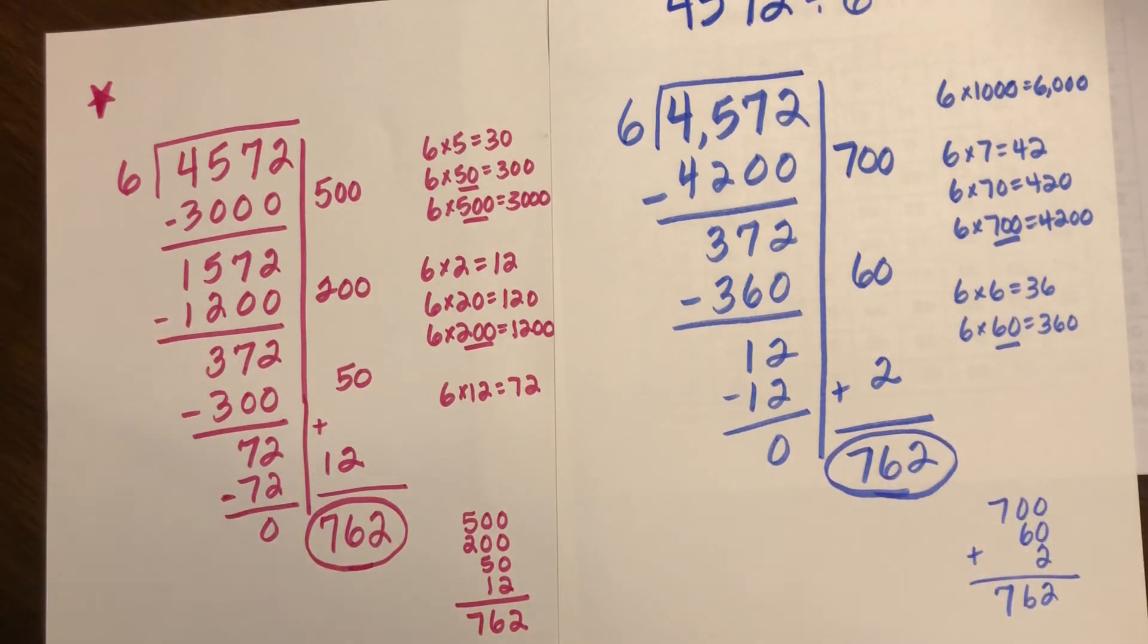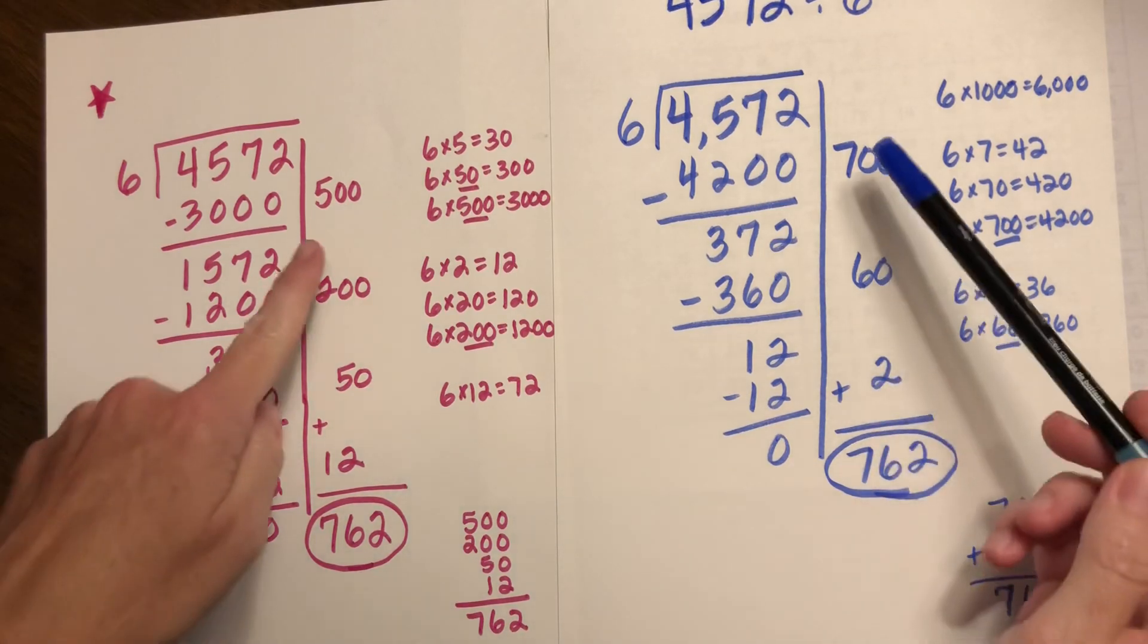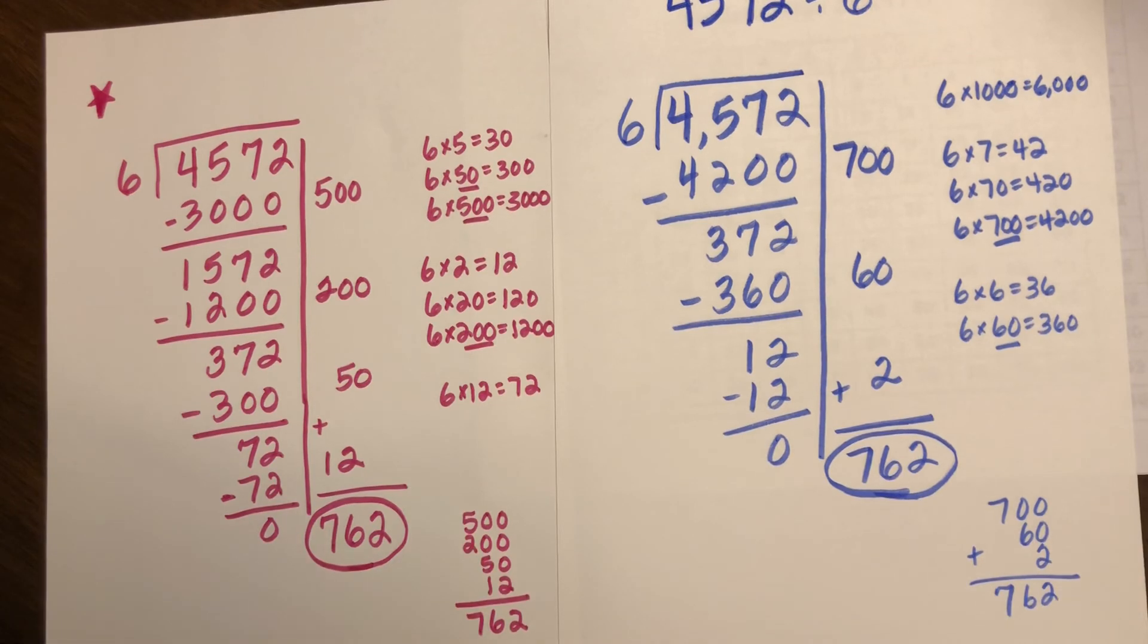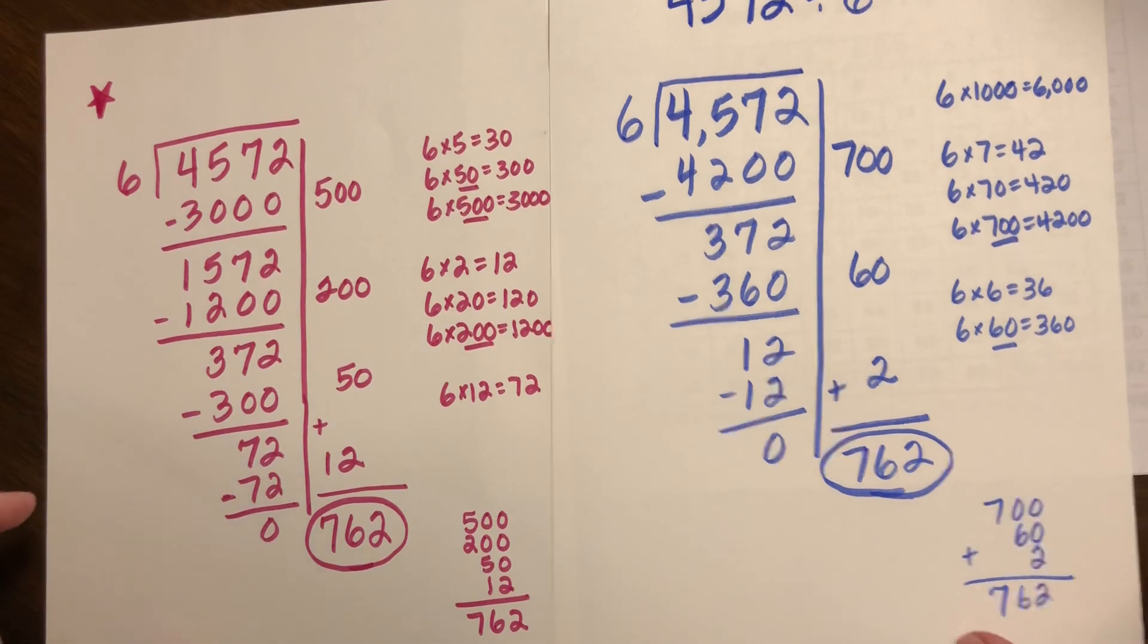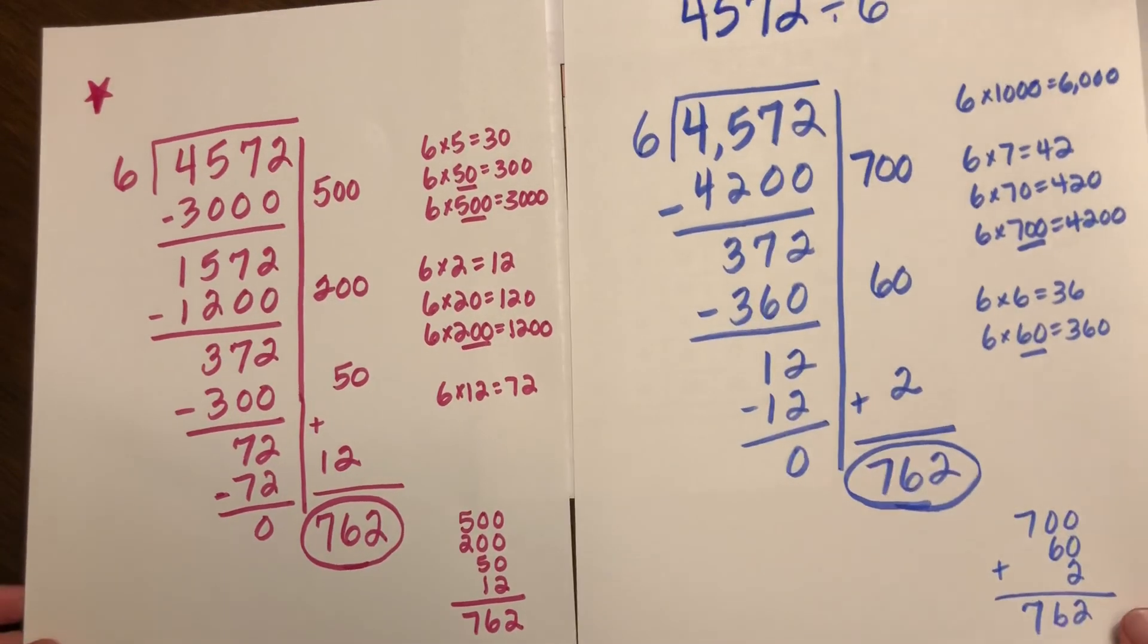Both methods are partial products, however the choices of how we grouped them along the way were based on our confidence and friendly numbers, confidence in our math facts and knowledge and friendly numbers.